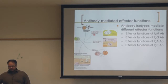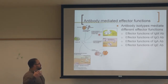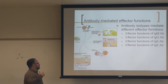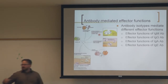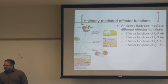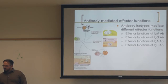FC receptors can also induce opsonization. The isotypes involved are IgA and IgG. IgA coats the surface of epithelial cells and is secreted into saliva, breast milk, and tears. IgG is the major isotype found in serum and circulation. FC receptors also help recirculate antibodies back to serum, maintaining serum antibody levels by recycling.